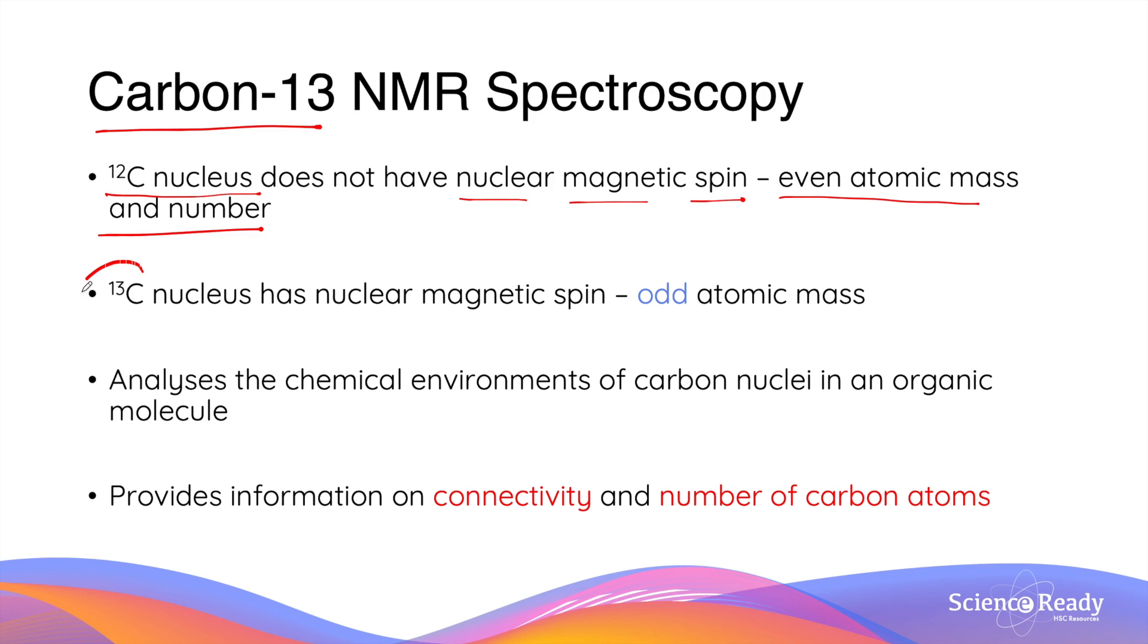Luckily we have carbon-13 nucleus which is an isotope of carbon that has this unique property which is the nuclear magnetic spin due to the fact that it has an odd atomic mass. Carbon-13 NMR analyzes the chemical environment of carbon nuclei in an organic compound. It provides essential information on the connectivity of the compound as well as information on the number of carbon atoms that are present in the compound.